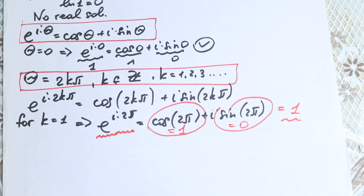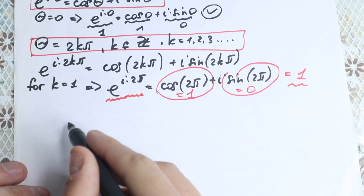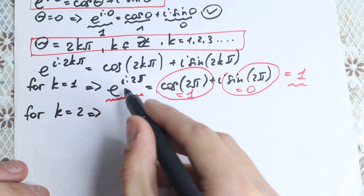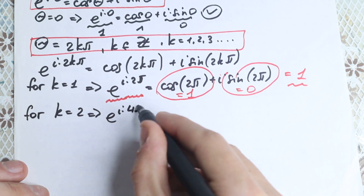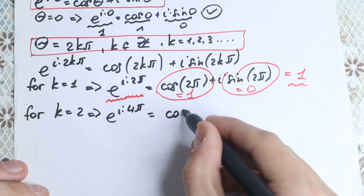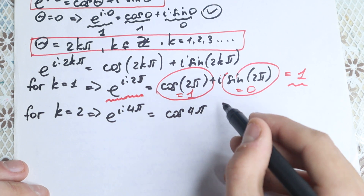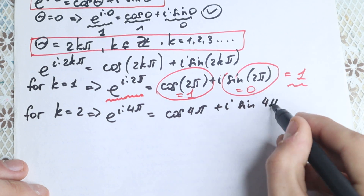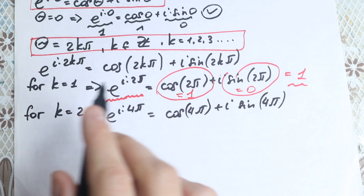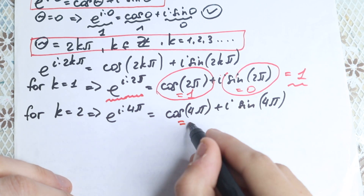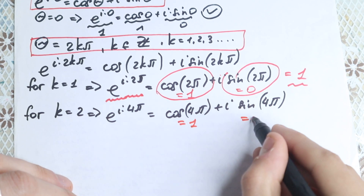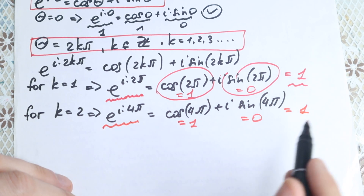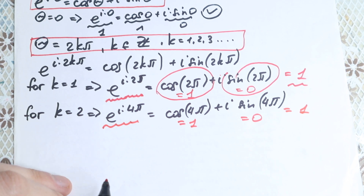For k equals 2, we have e to the power i times 4 pi equals cosine 4 pi plus i sine 4 pi. Cosine 4 pi equals 1 and sine 4 pi equals 0, so we get the same result: this expression equals 1.